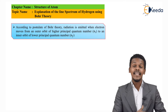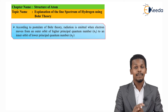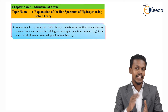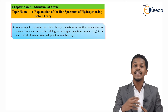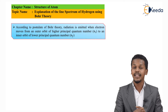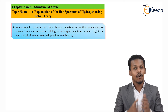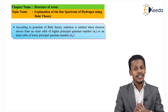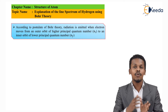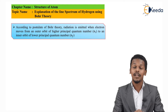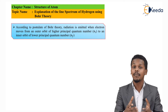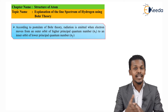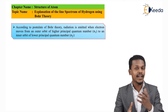In the previous topic, as we discussed the postulates of Bohr's atomic theory, we got to know that whenever the electron jumps from a higher orbital to a lower orbital, it will emit radiation in the form of energy. So let me talk about the line spectra exhibited by hydrogen, where Bohr's postulate plays a very vital role.